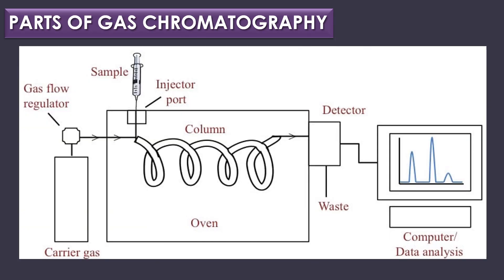Some of the important parts of gas chromatography are: carrier gas, sample injector port, separation column, liquid phase, support materials, detector, and finally recorder or computer for data analysis. These are the important parts of gas chromatography.